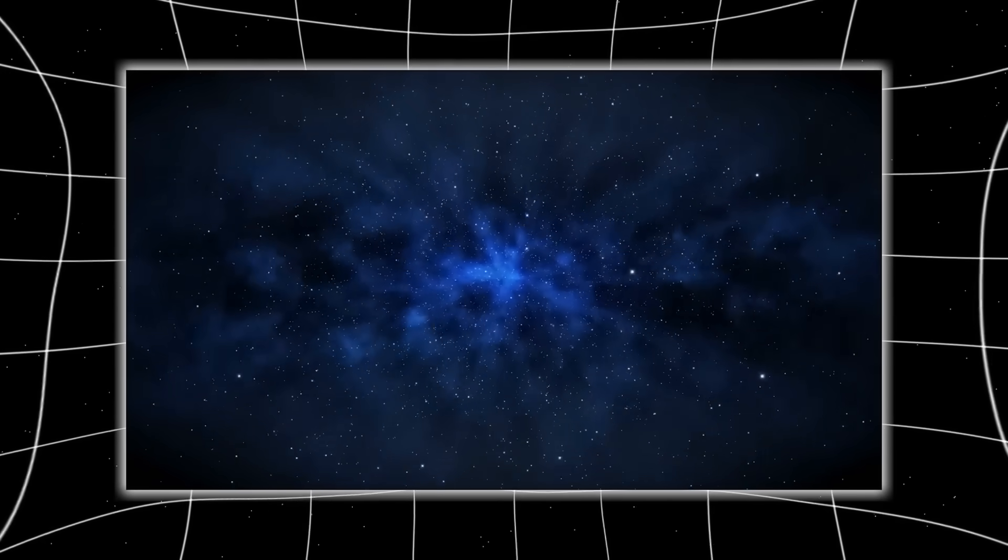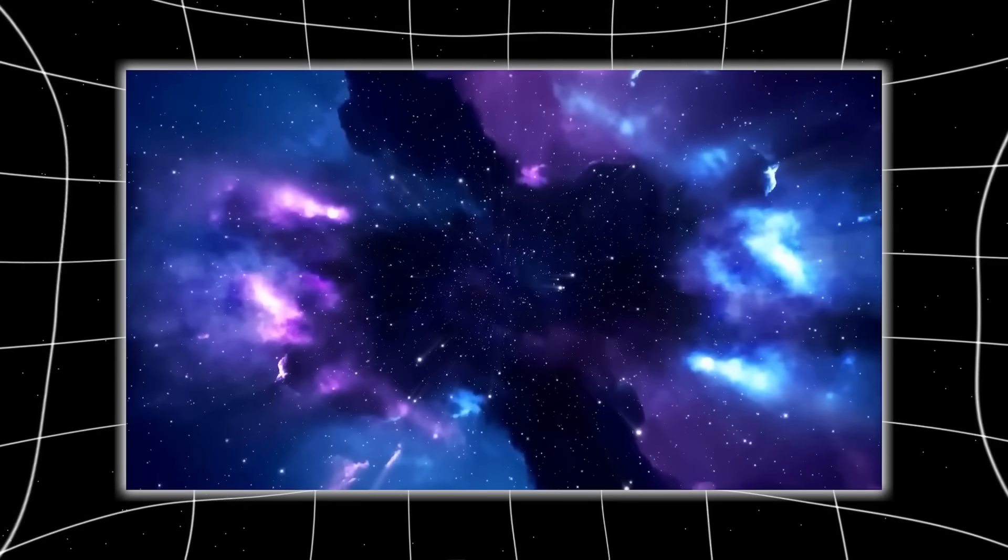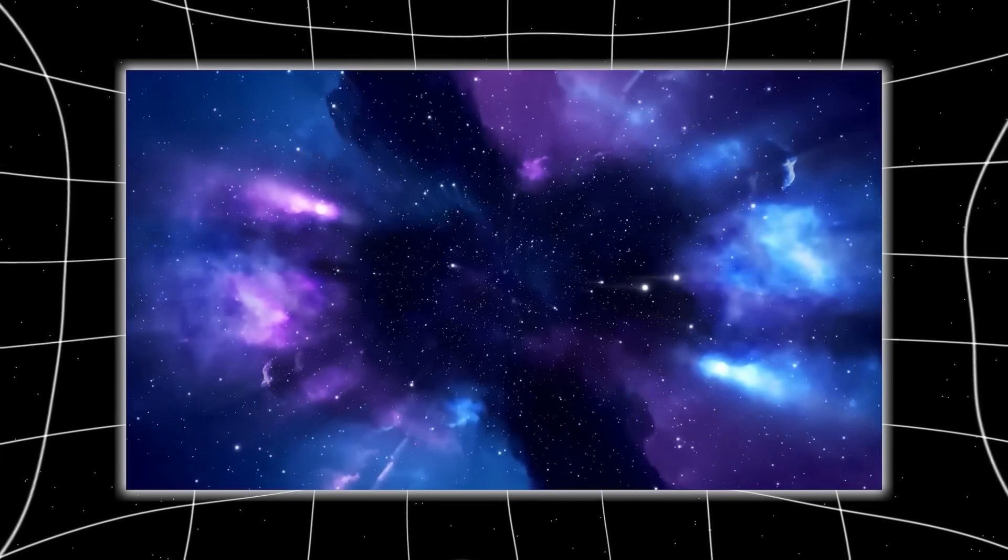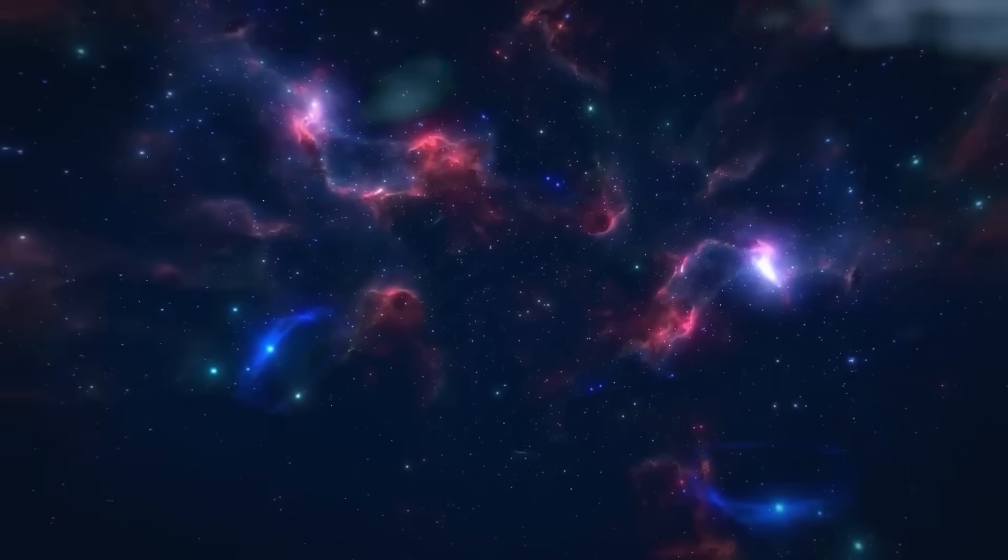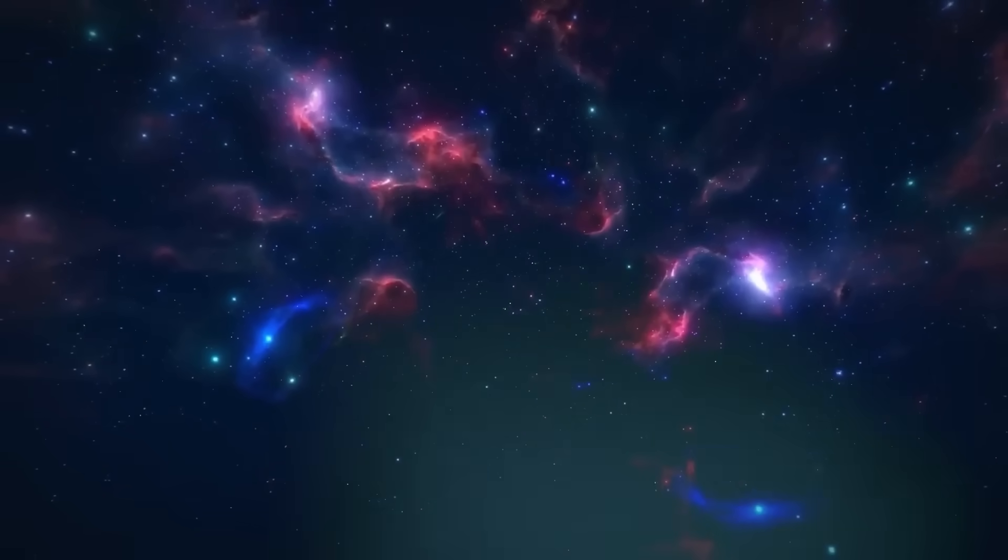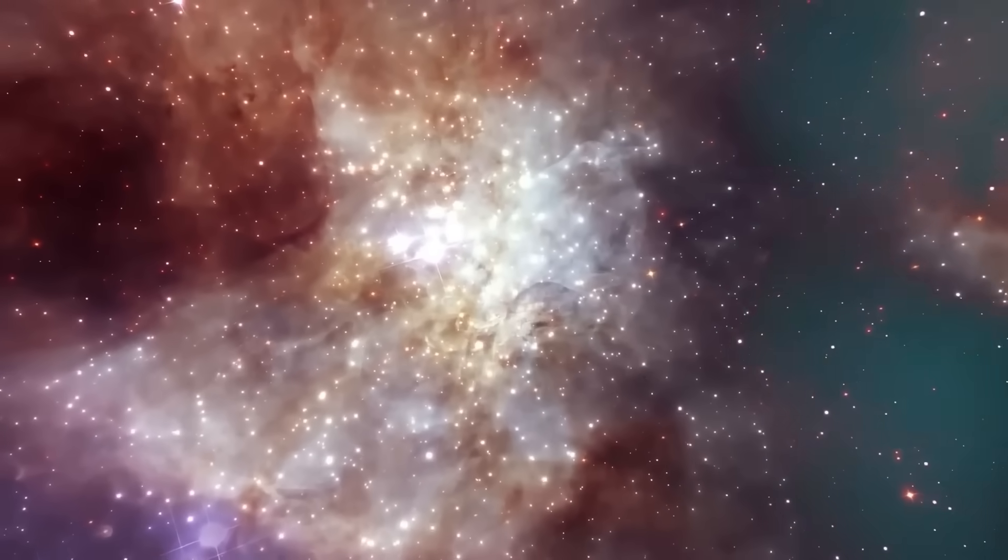Somehow the same cosmic structure, separated by billions of years and billions of light years, was mirrored across space. This suggests that light itself may be caught in a loop, bending not just around matter but through a deeper topology of space that we've never mapped. If that's the case, then our perception of the cosmos as a vast open sea might be entirely wrong.